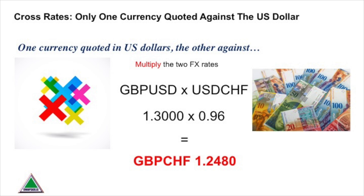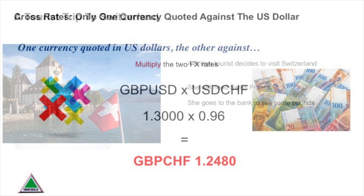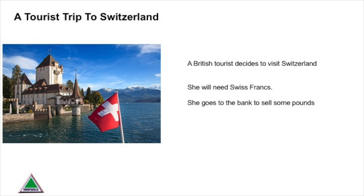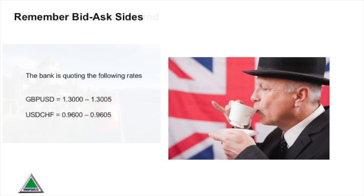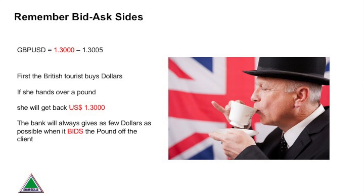If we are to calculate cross rates accurately, we need to take into account bid-ask or bid-offer quotes. I'm using the example of a British tourist who wants to go to Switzerland, so she will need to sell pounds and buy francs. Let's say she does this in two steps to highlight the bid-ask spreads. The bank is quoting two-way rates for cable and the Swiss franc. Our tourist buys dollars with her pounds — the bank will bid the pound off the client and give back as few dollars as possible, in this case $1.30.